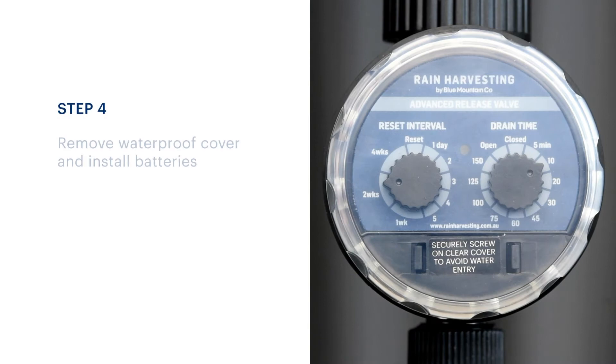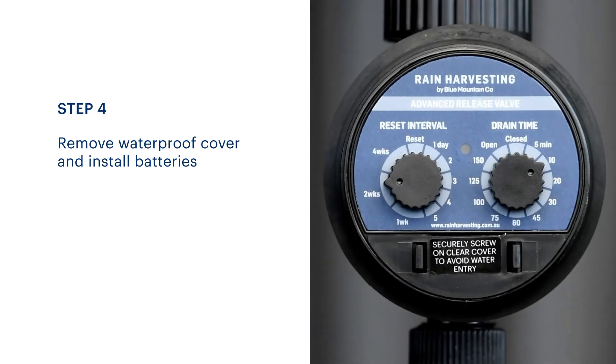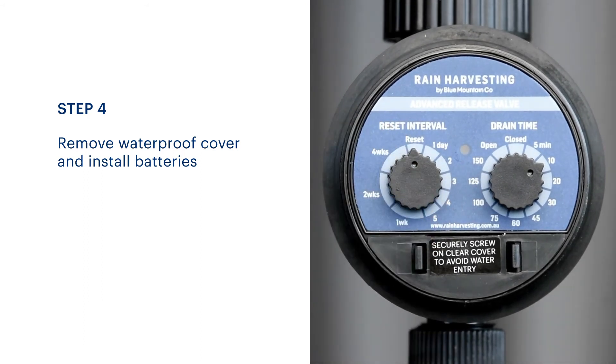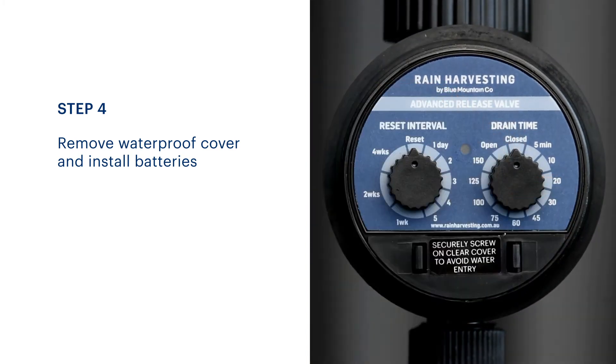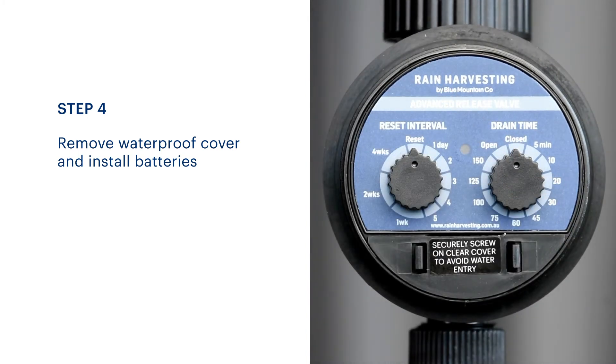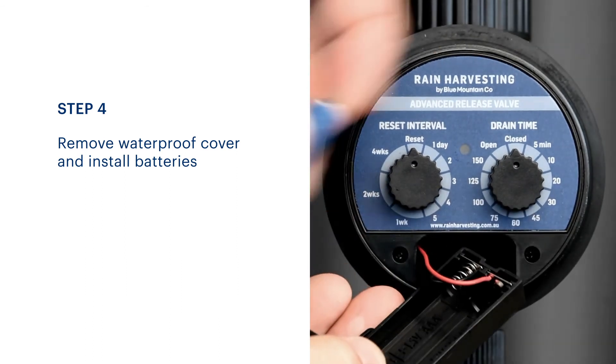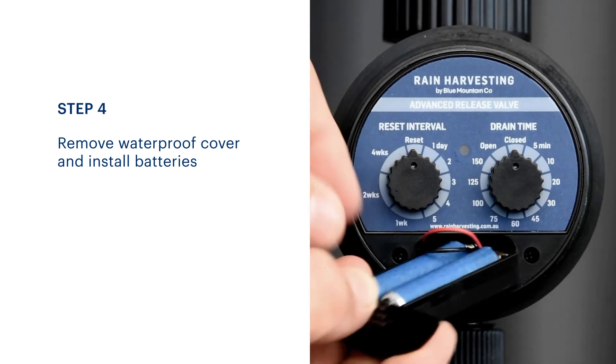To install the batteries, first remove the clear waterproof cover. Ensure the reset interval and drain time knobs are set to reset and closed respectively. Remove the battery box by squeezing the two tabs together and sliding out. Fit two 1.5-volt AAA batteries before returning the battery box in place.